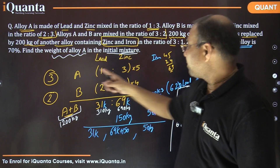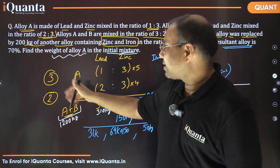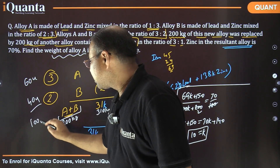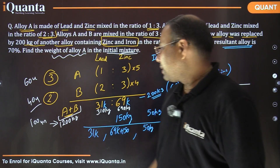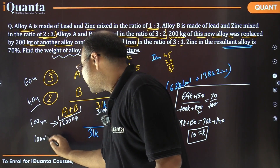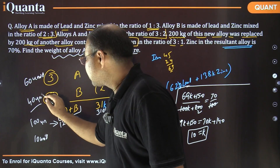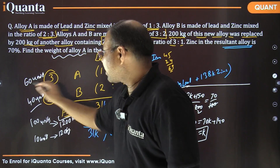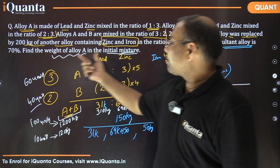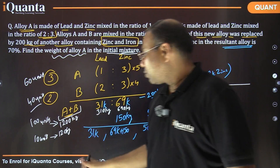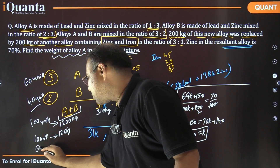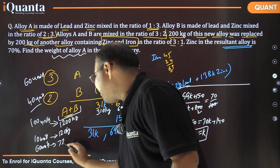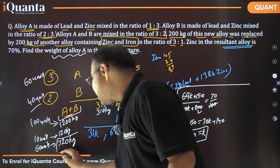The initial mixture of 1200 kg corresponded to 100 units total. Alloy A was three parts out of the combined five-part mix, which was 60 units out of 100. Since 10 units equals 120 kg, alloy A at 60 units equals 6 times 120, which is 720 kg. So the weight of alloy A in the initial mixture is 720 kilogram.